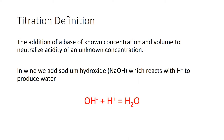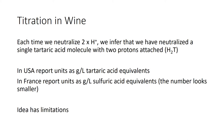Titration is the addition of a base of known concentration and volume to neutralize acidity of an unknown concentration. In wine, we add sodium hydroxide, which reacts with free protons to produce water. The protons still attached to the acid skeletons become exposed during this process and can be titrated. So titration forces the wine to expose all possible protons, which are then neutralized. Every time we neutralize two protons, we infer we've neutralized a single tartaric acid molecule. In the U.S., we report units as tartaric acid equivalents.